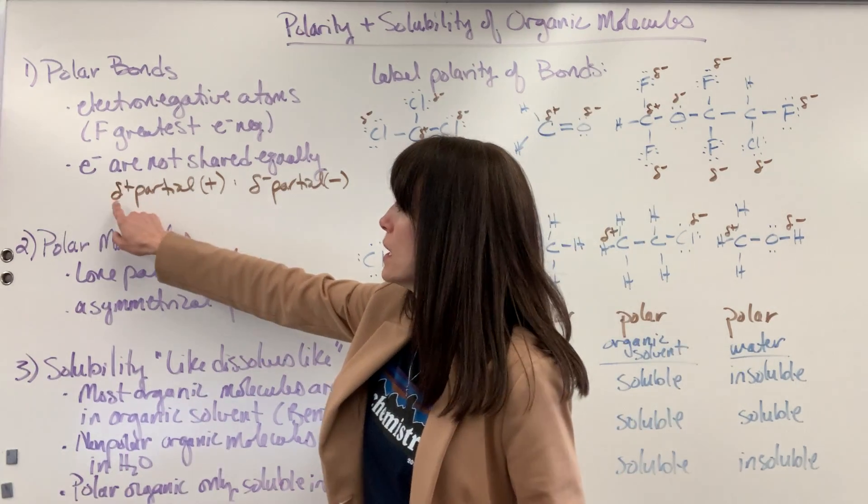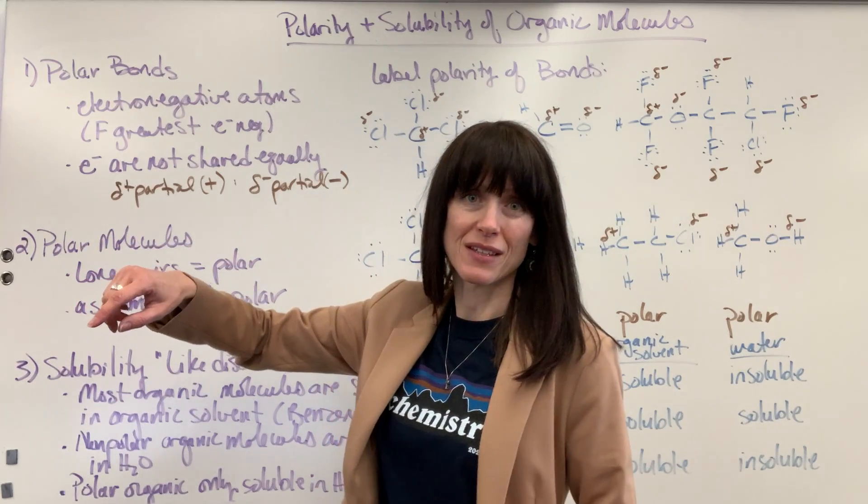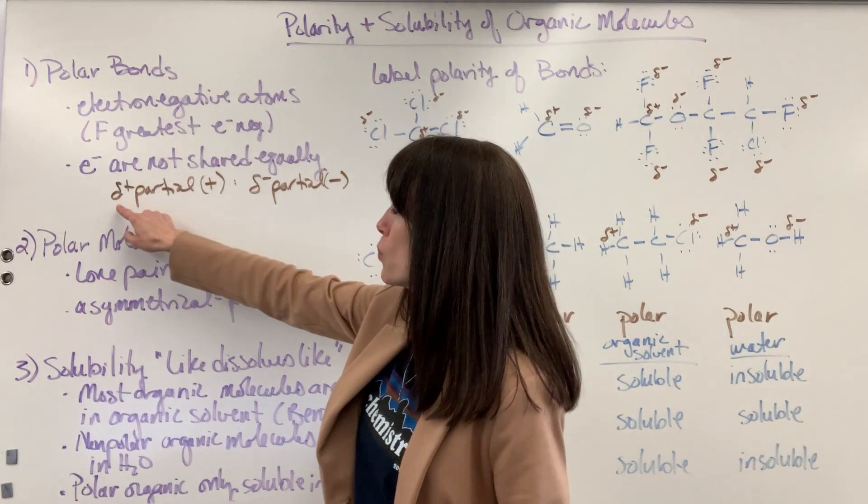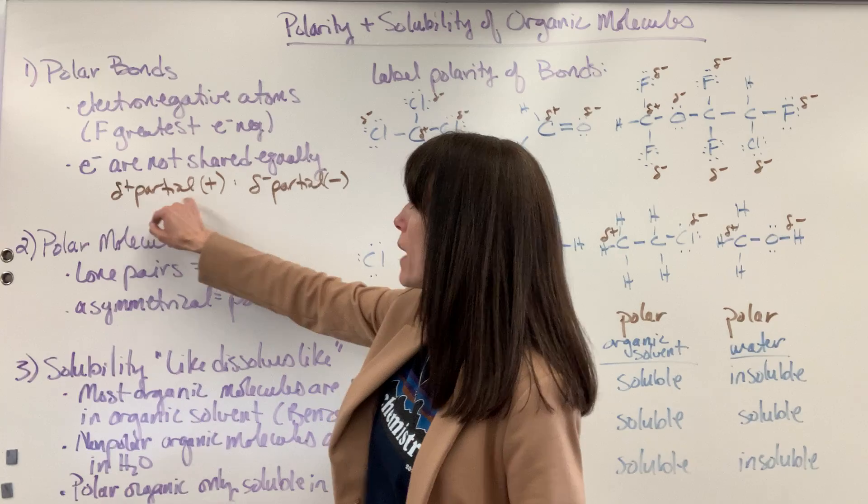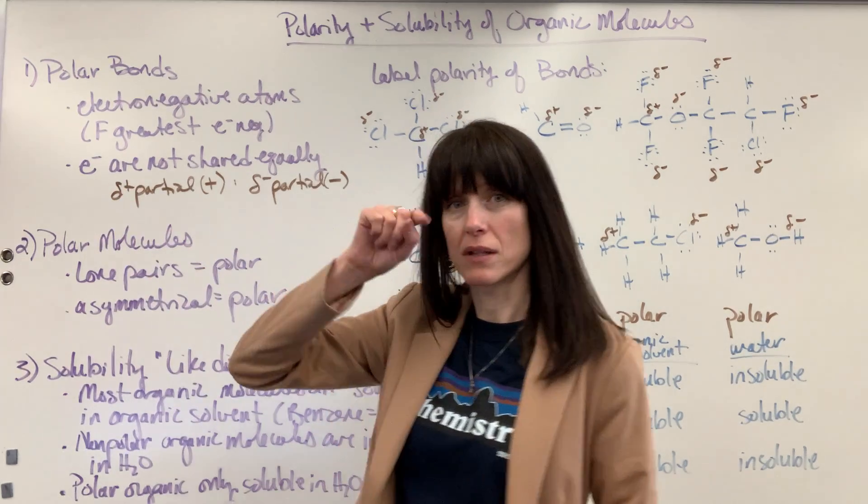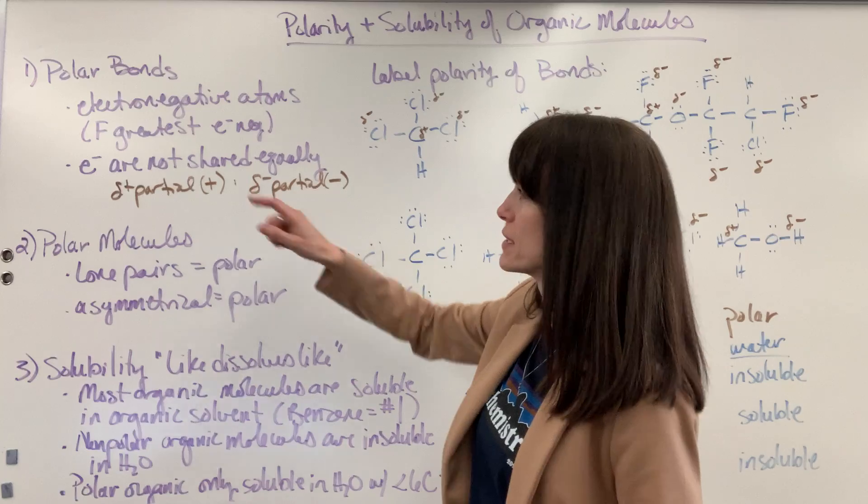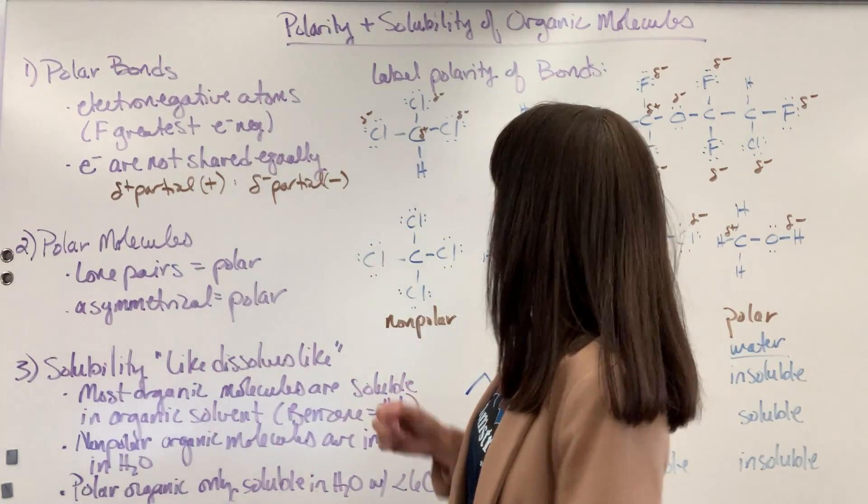We also use these symbols. This is the lowercase delta in the Greek alphabet. So we call this a partial positive, and this is called a partial negative with that little delta and a negative sign.